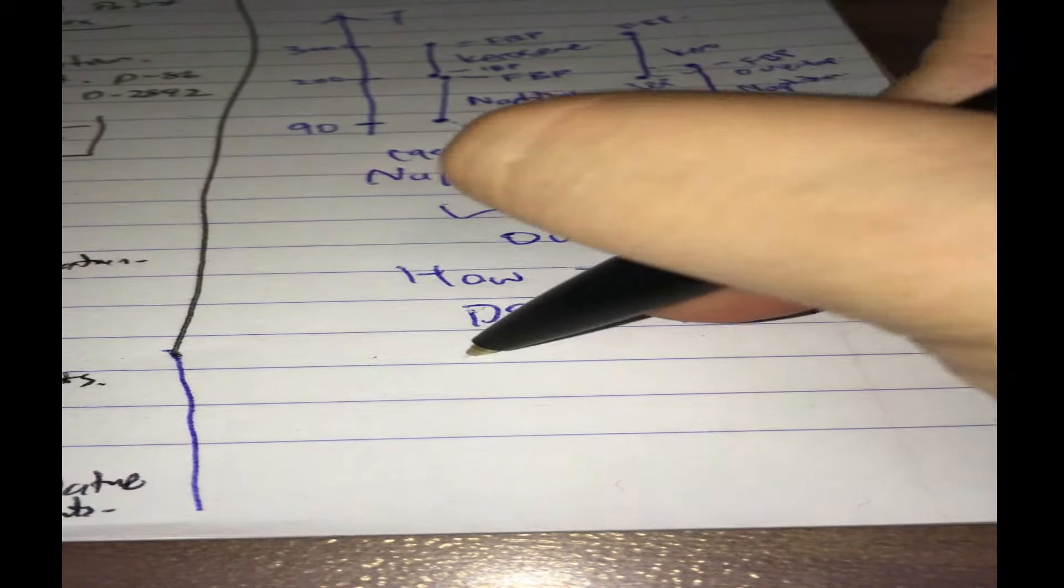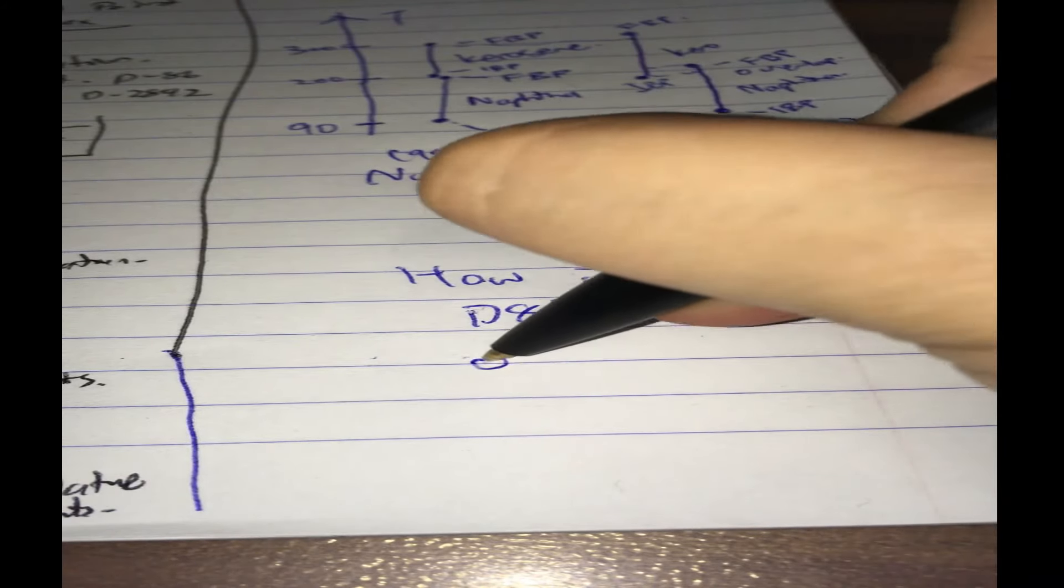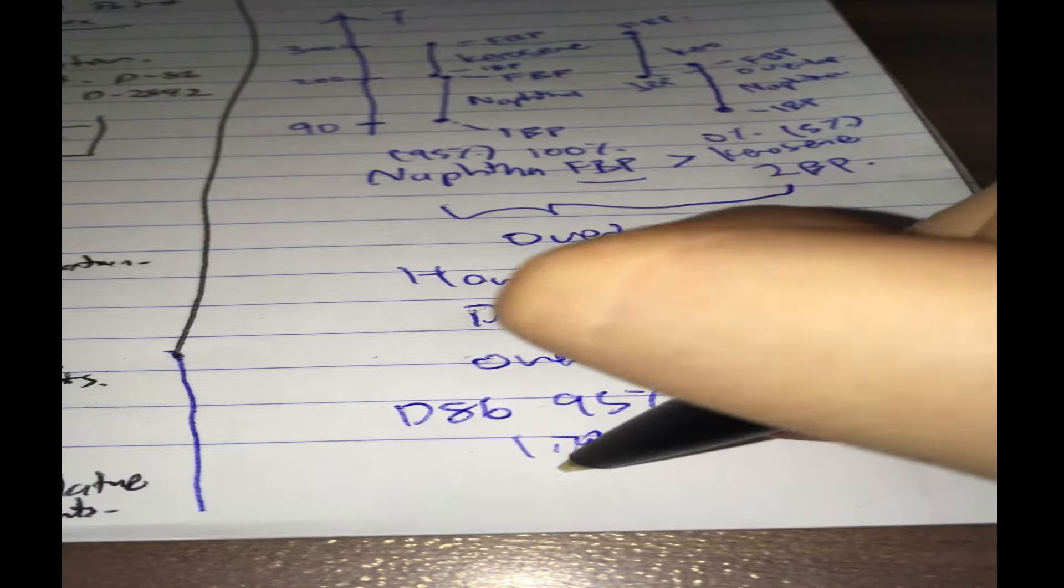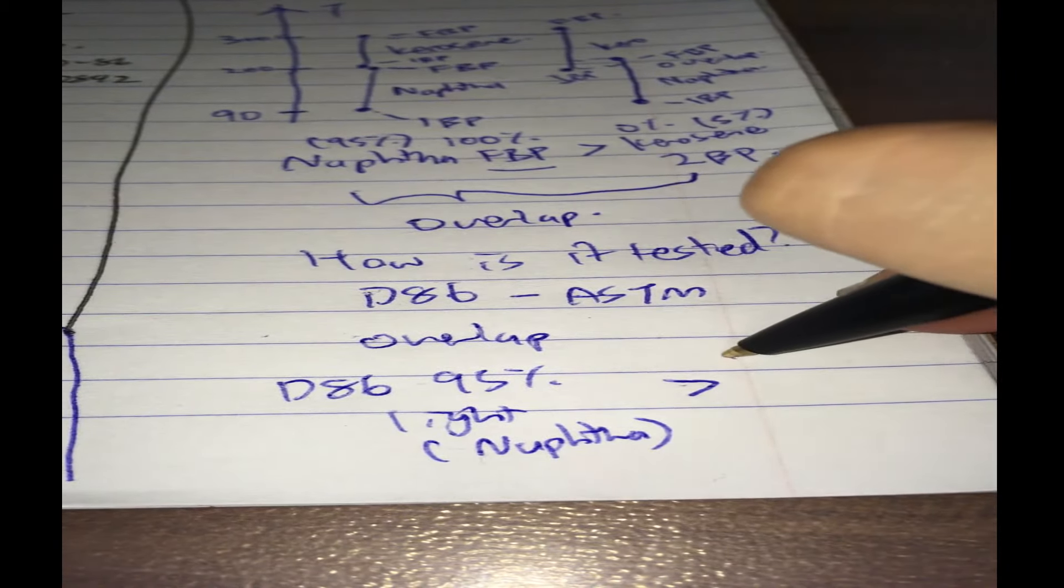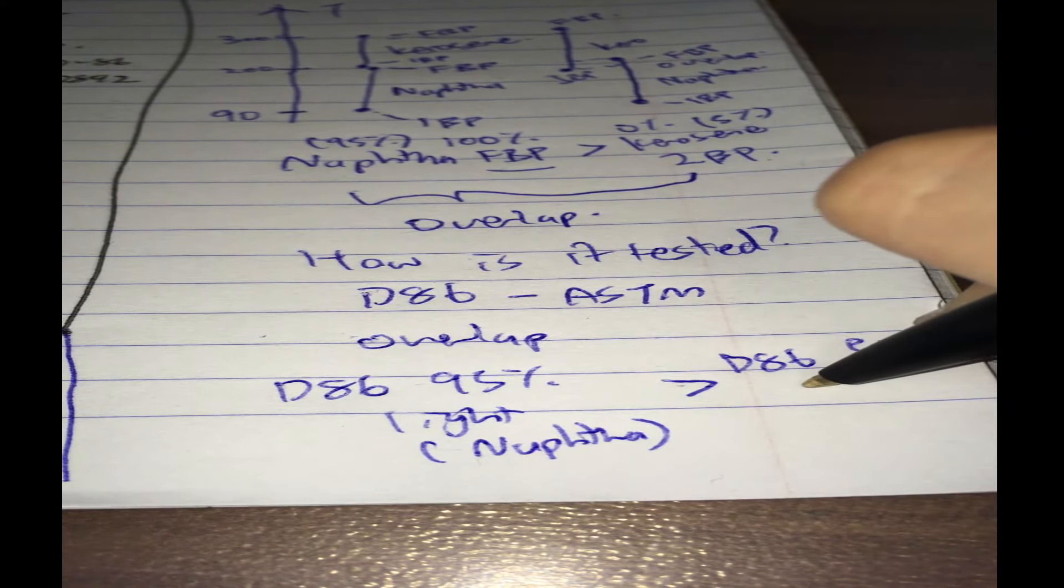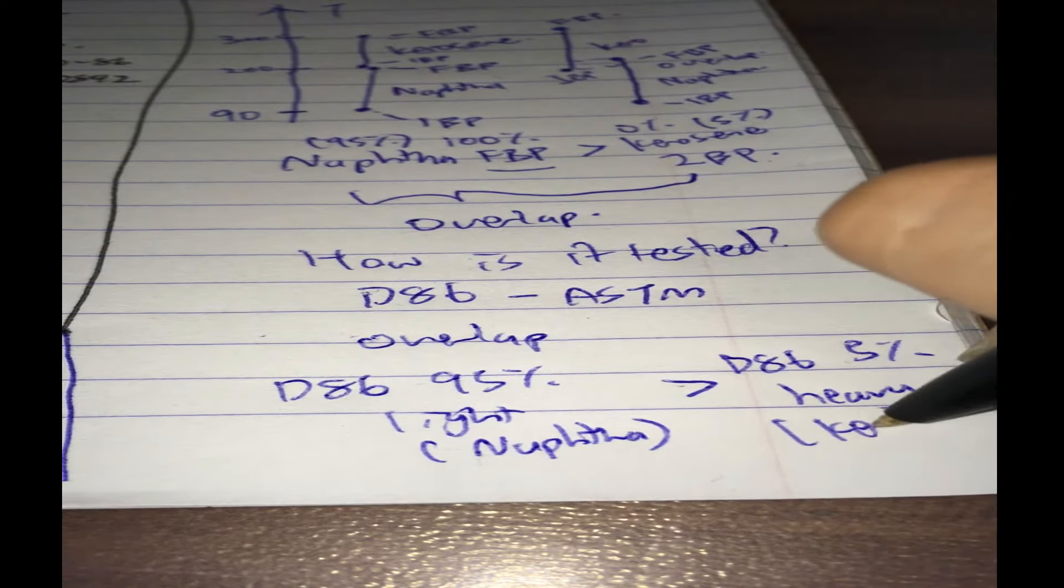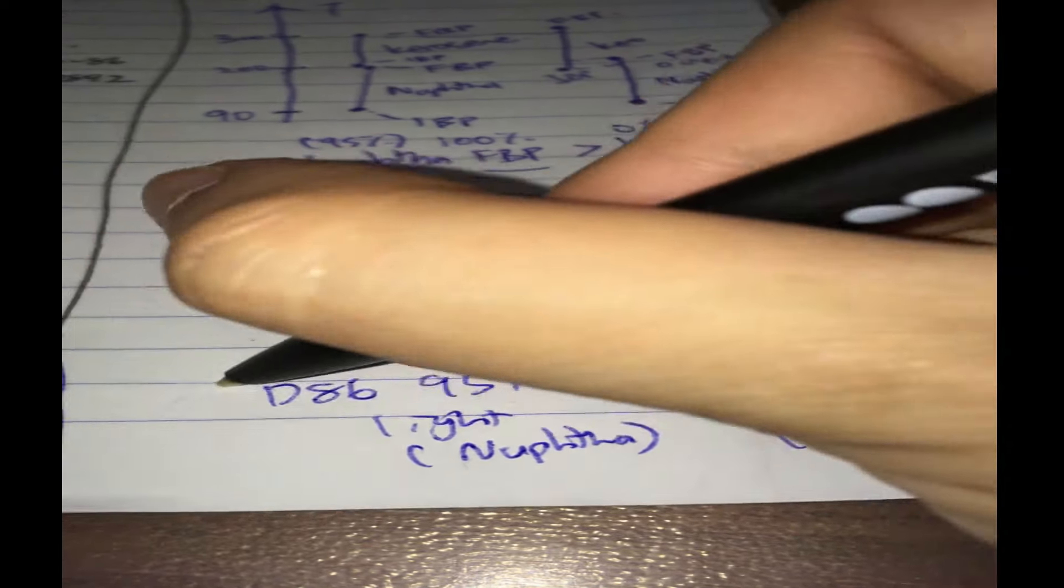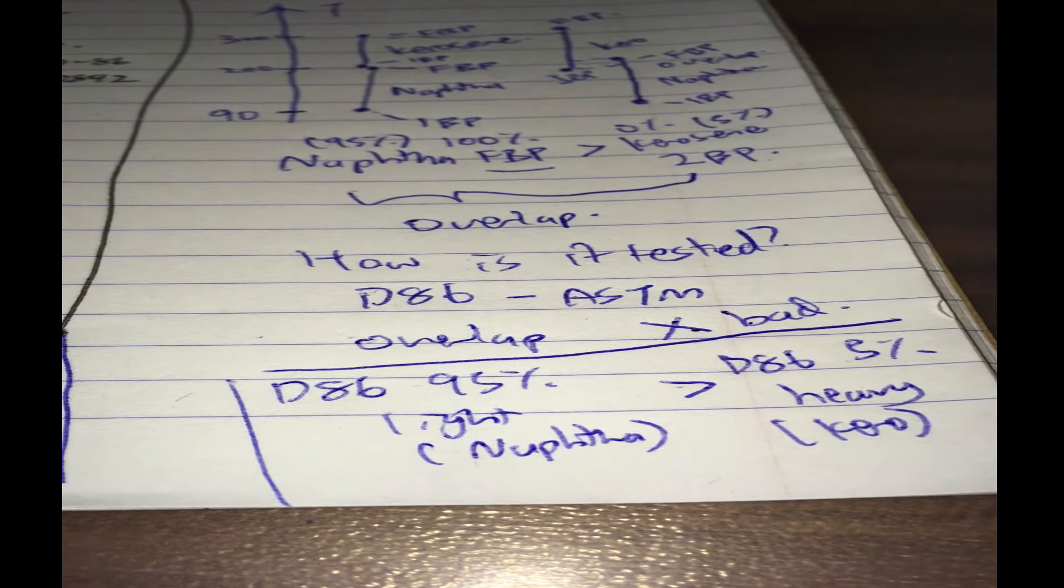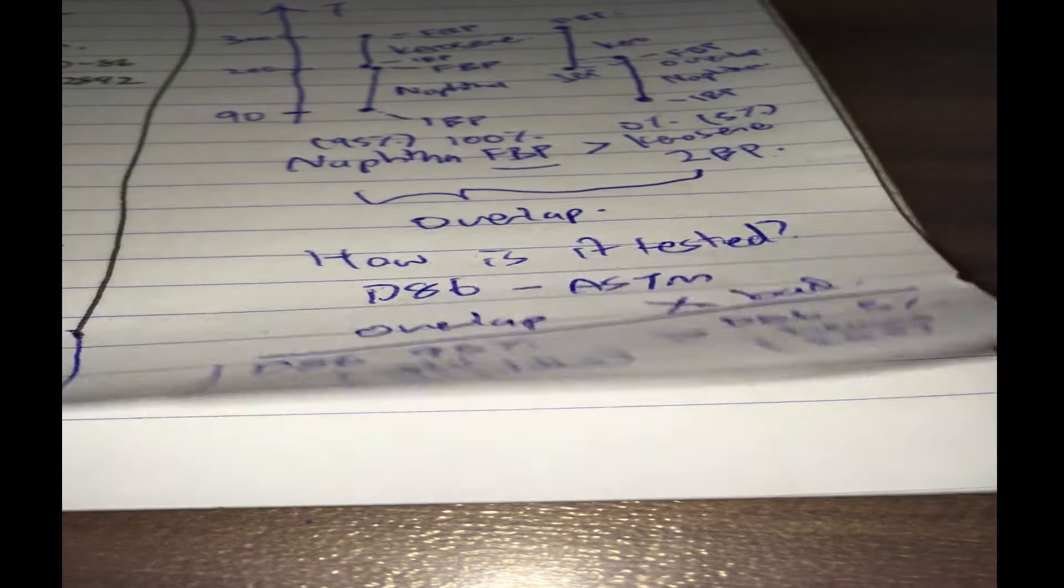So let's just redefine an overlap. So D86 95% of the light, which is in this case naphtha, is more than D86 5% of the heavy kerosene. This is a bad situation, that's what you don't want.